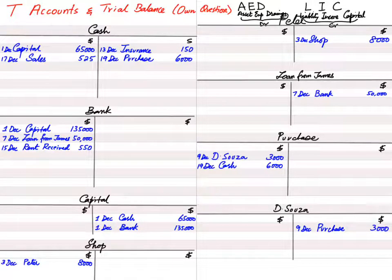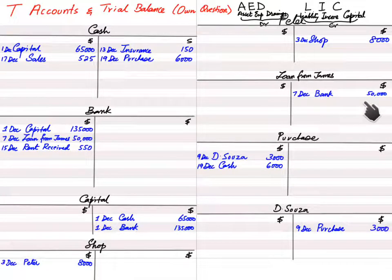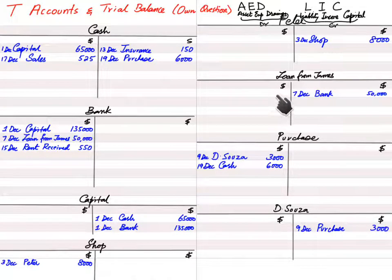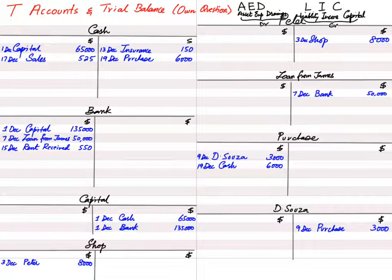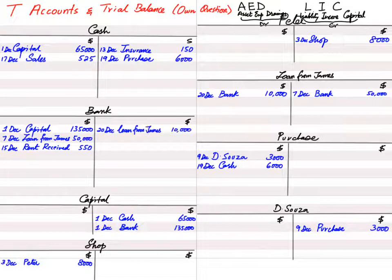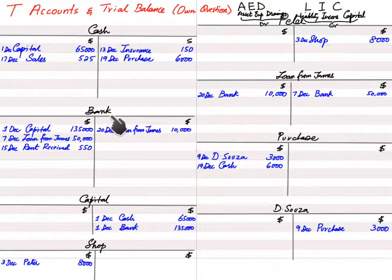Transaction 10: we repaid part of the loan to James by cheque. When we first received the loan, bank was debited and loan was credited. Now it reverses. The loan liability is decreasing, so the loan account is debited. Our bank balance also decreases, so the bank account is credited. The entry is: debit loan from James with reference 'bank,' and credit bank account with reference 'loan from James.'